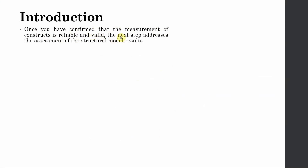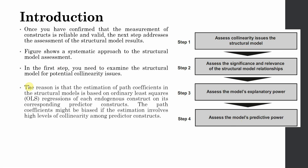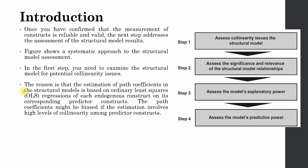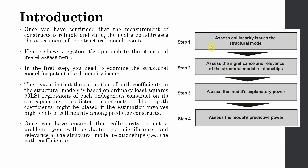Once you have confirmed that the measurement of constructs is reliable and valid — that is your measurement model assessment — the next step addresses the assessment of structural model results. The figure here shows a systematic approach to structural model assessment that we are going to follow. In the first step you assess the collinearity, because the estimation of path coefficients is based on ordinary least squares (OLS) regressions for each endogenous construct on its corresponding predictor constructs. Path coefficients might be biased if the estimation involves a high level of collinearity, so it's better to check the collinearity diagnostics. Once you have ensured collinearity is not an issue, you evaluate the significance and relevance of the structural model relationships — that is, the hypotheses you have proposed.